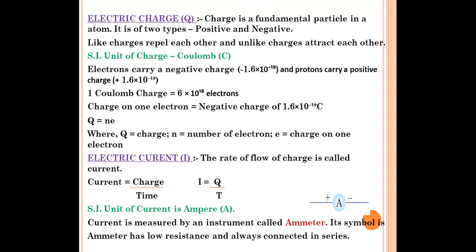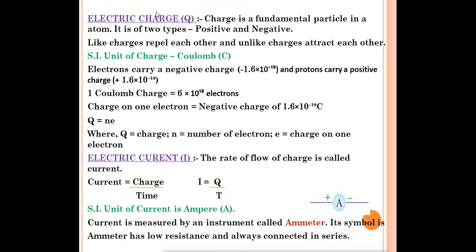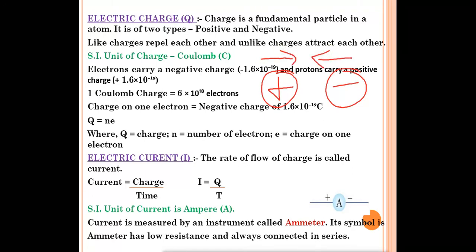First we'll start with Electric Charge, represented by the letter Q. Charge is a type of fundamental particle present in an atom. There are two types of charges: positive and negative charge. Unlike charges attract each other, and like charges repel each other — positive and negative will attract, but positive and positive will repel.